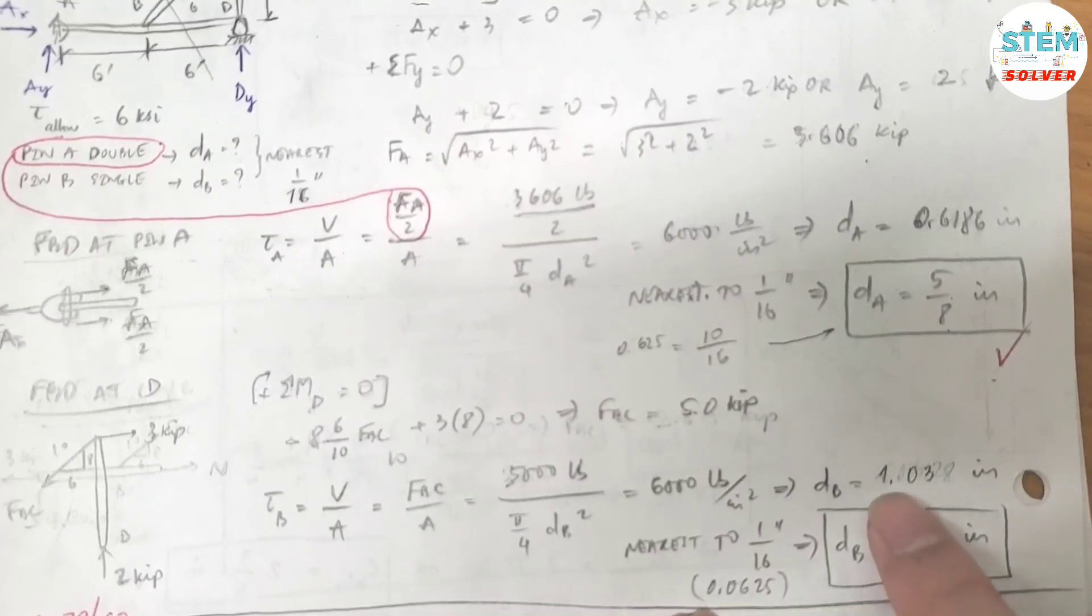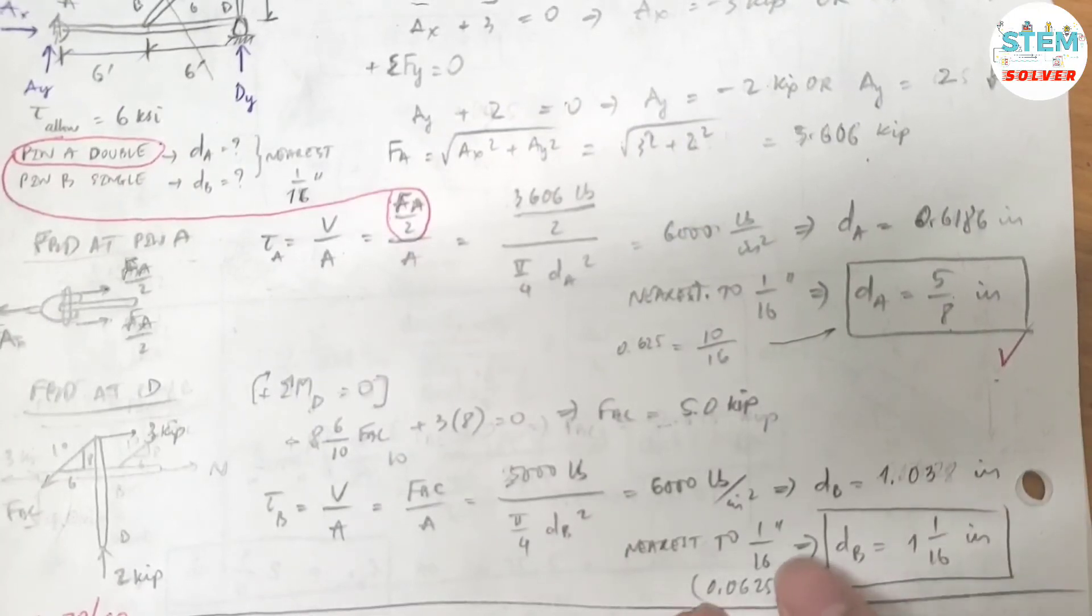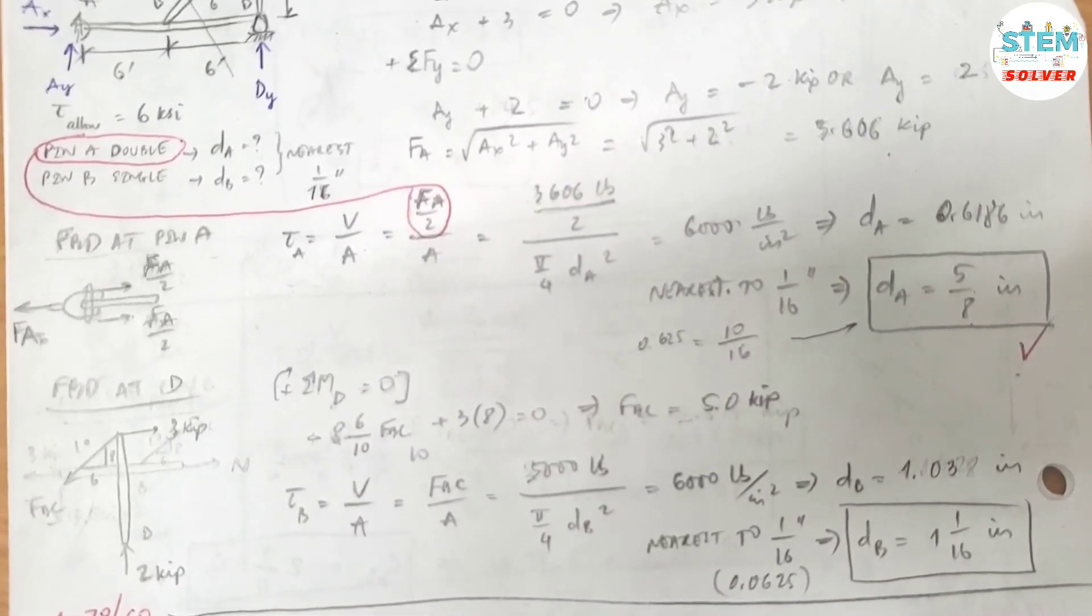The question asked you to find the diameter to the nearest 1/16th inch, which is 0.065. So I have 1 inch, 1.03. And what is 0.03? That is less than 1 over 16th, so the final diameter of pin B is equal to 1 1/16th inch. So that's it.